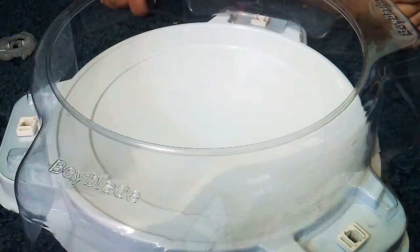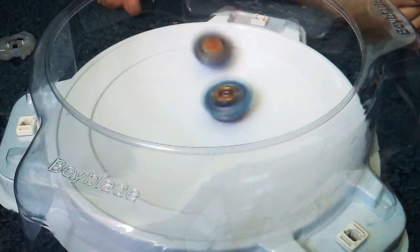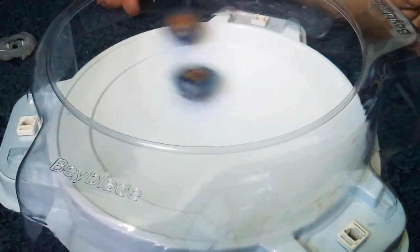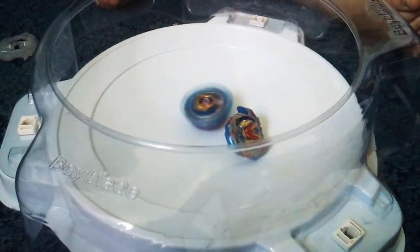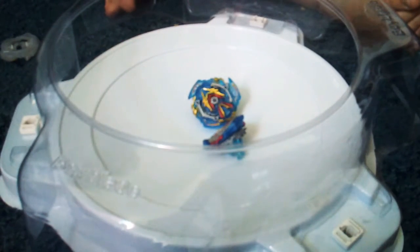So, 3, 2, 1, let it rip. Okay, let's see. Chosie versus GT. And GT takes the first win. The score is 1-0.